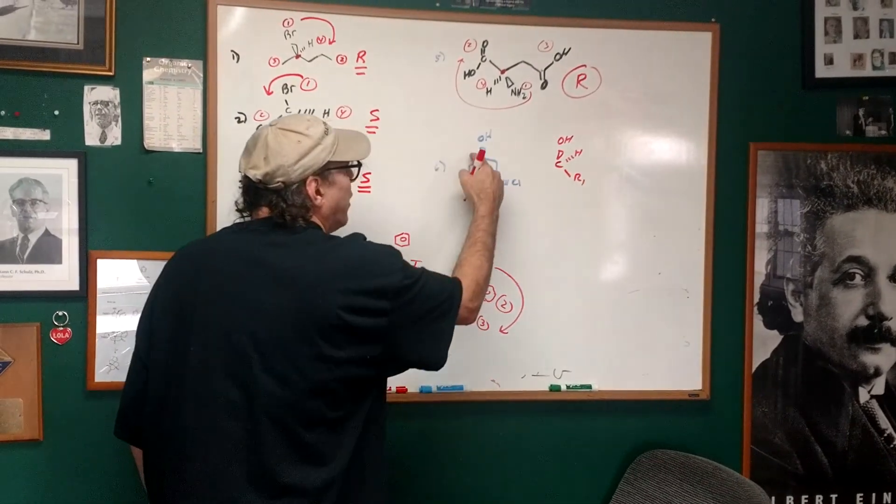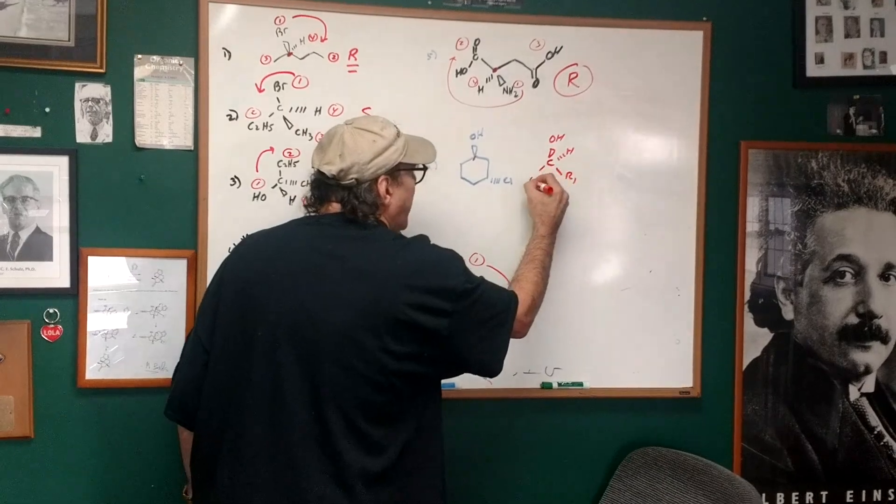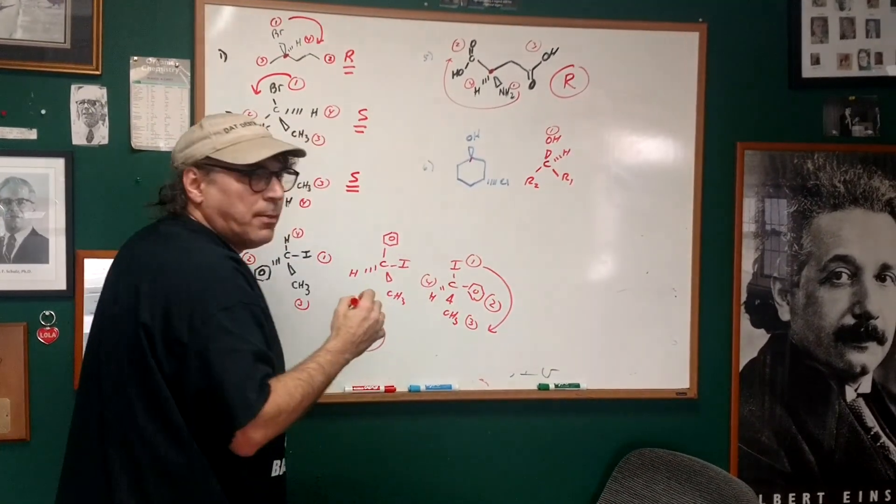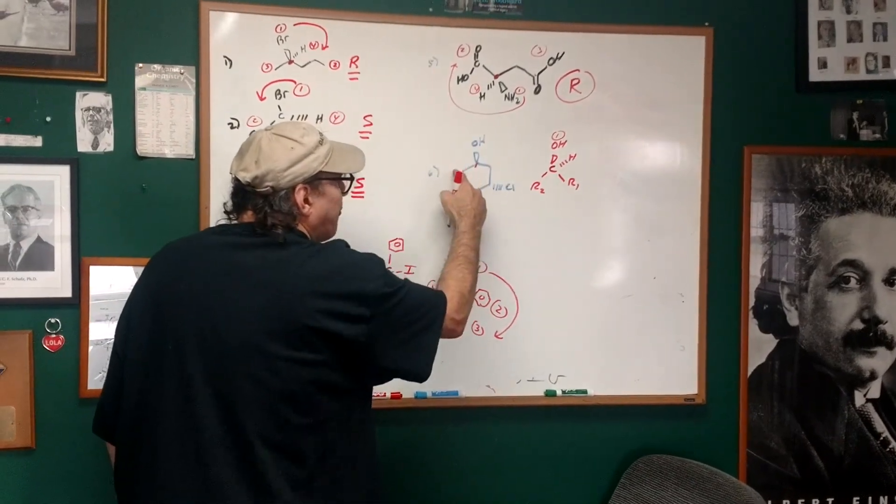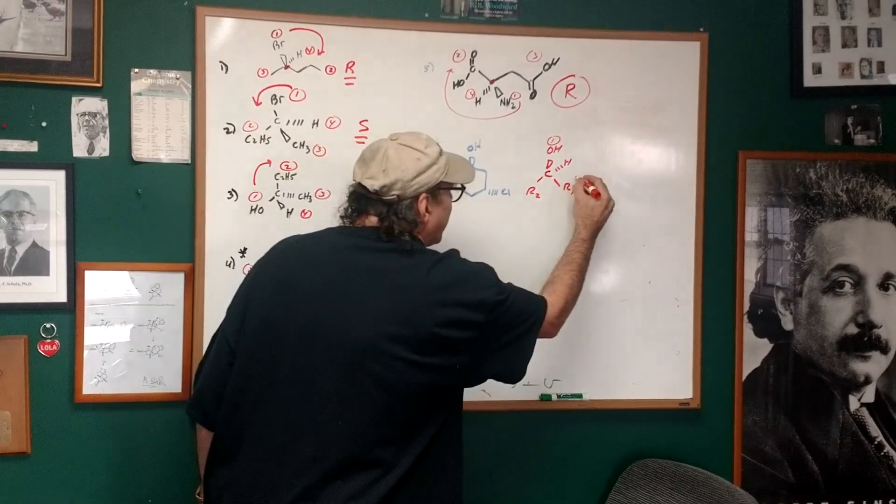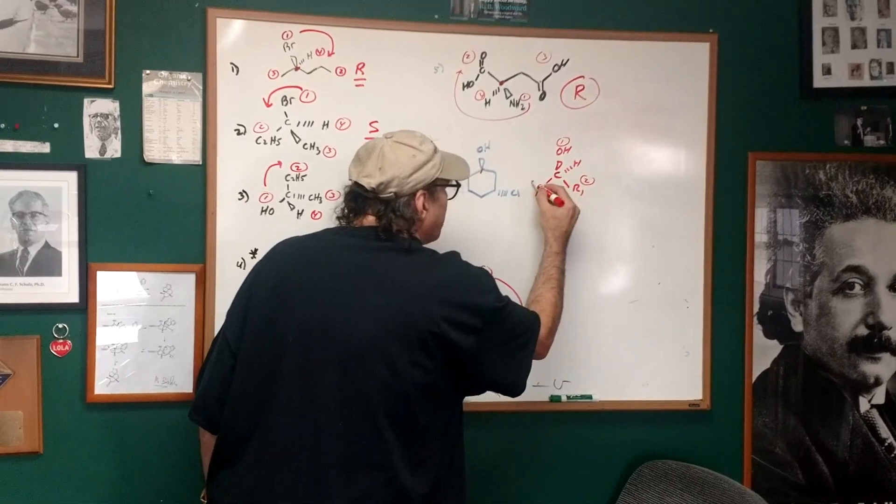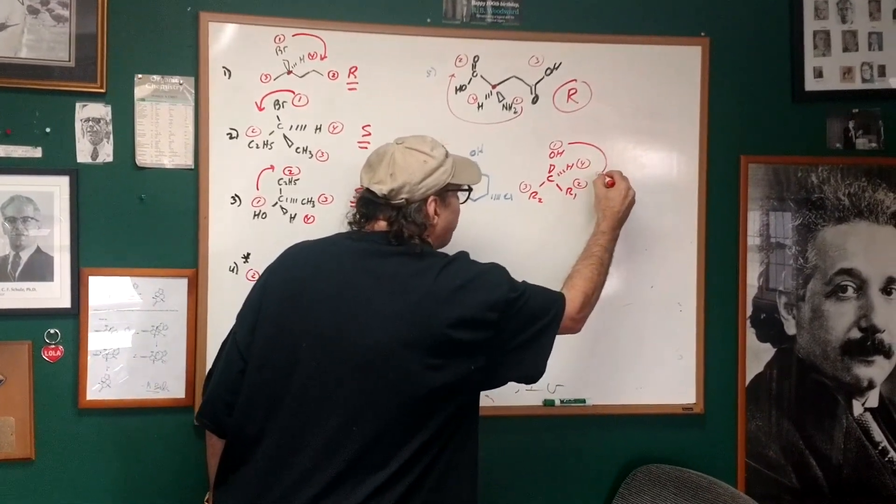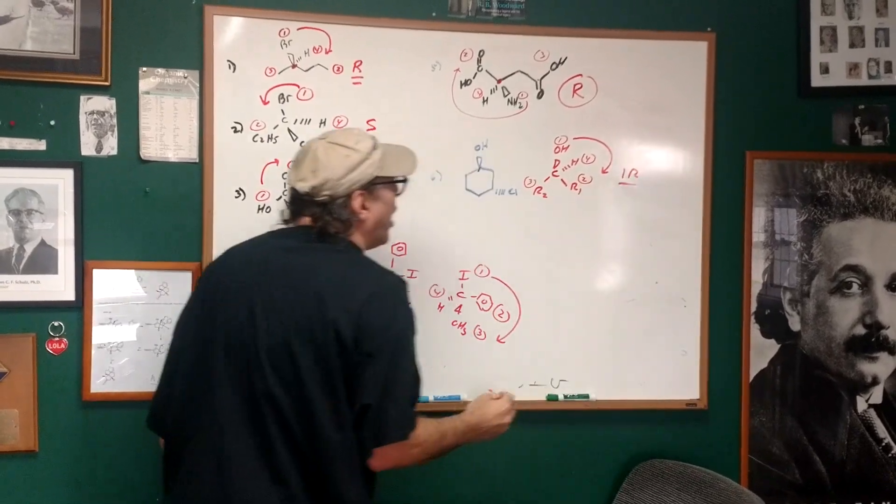You have this path going this way, I'll call that R1. You have this path going this way, I'll call that R2. The OH is number one. This path is worth more than this path because it's a chlorine. So this is two, this is three, and this is four. Going over four, we see that we have a one R.